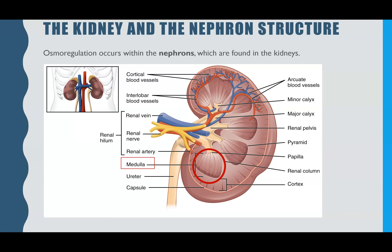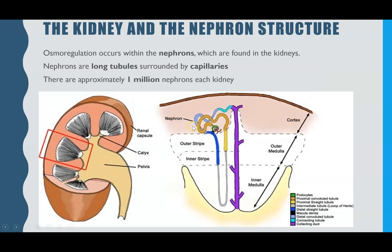Starting off with an overview of the kidney — you don't actually need to know the structures in detail. All you need to know is that the filtering and osmoregulation, which will be in a later video, occur in the nephrons. The nephrons are found within the medulla. The nephrons are these long tubules which are surrounded by capillaries, and you have about 1 million nephrons in each of your kidneys.